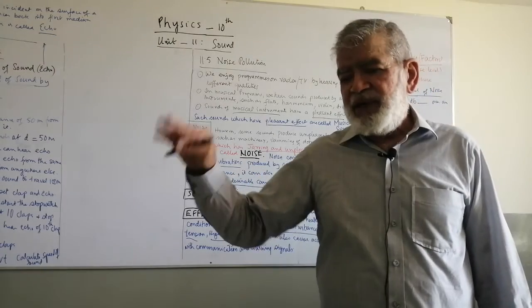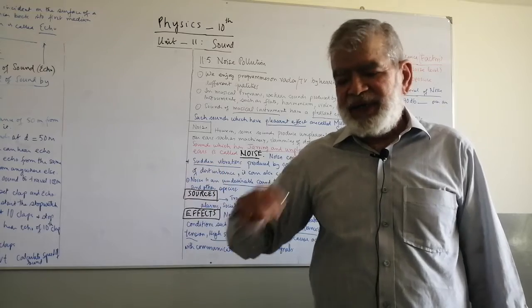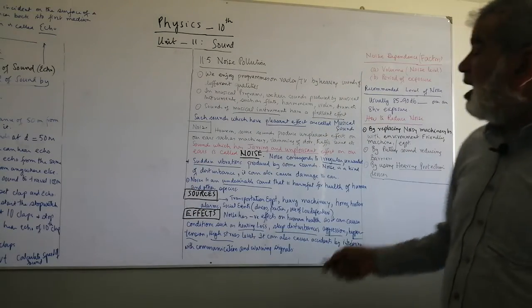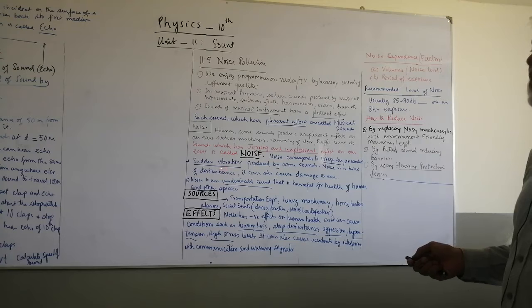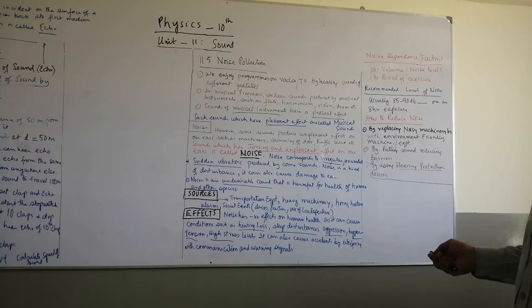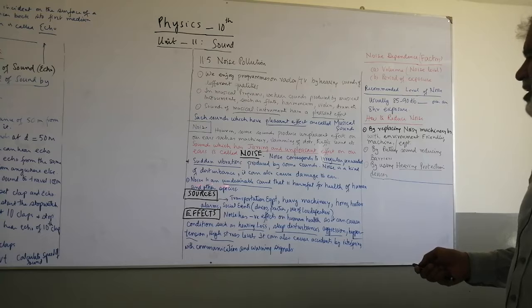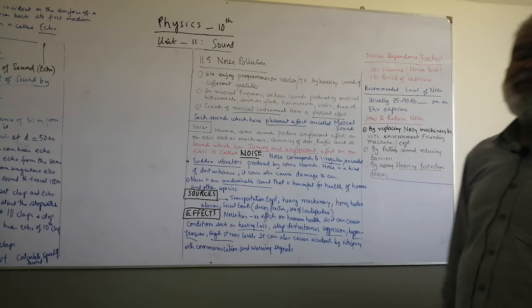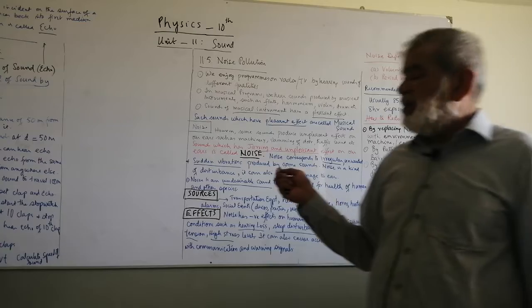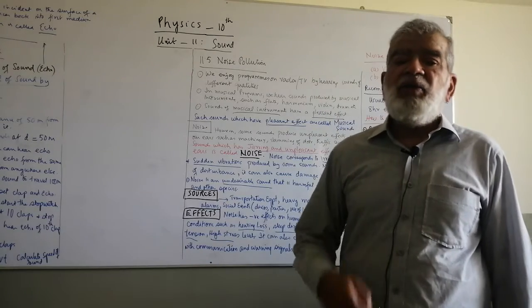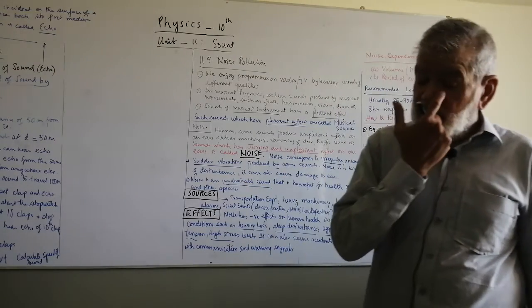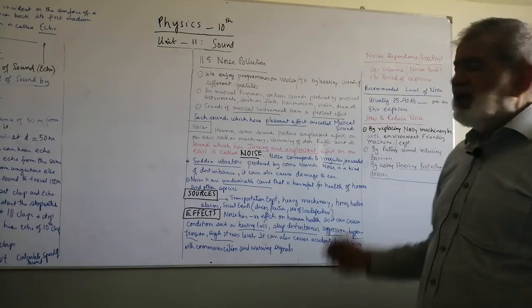Musical sound has harmony — it goes in a harmonic manner and causes a pleasant effect. Unpleasant sound has an irregular pattern; it is unwanted and sudden vibration. Noise is a kind of disturbance and can also cause damage to the ear. Noise is an undesirable sound that is harmful for the health of humans and other species. Noise is that which has an unpleasant effect; musical sound is that which has a pleasant effect.